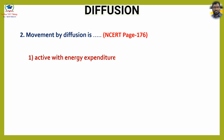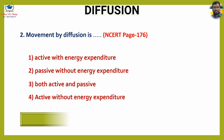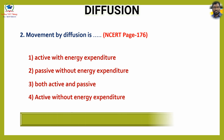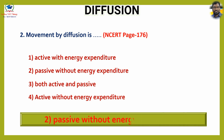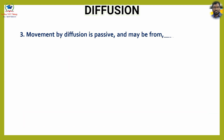Question number two: Movement by diffusion is — options: one active with energy expenditure, two passive without energy expenditure, three both active and passive, four active without energy expenditure. The answer is option two, passive without energy expenditure.